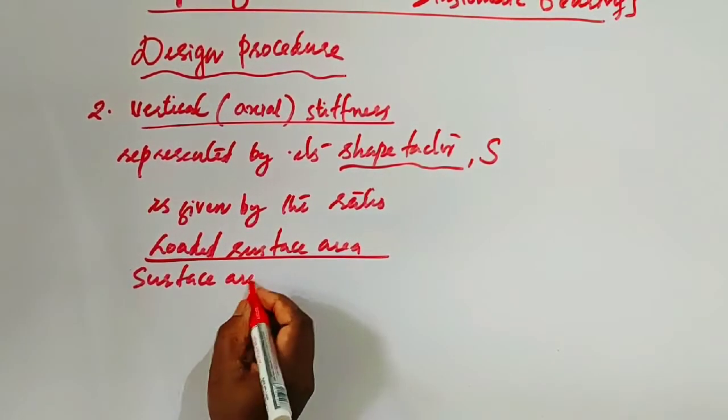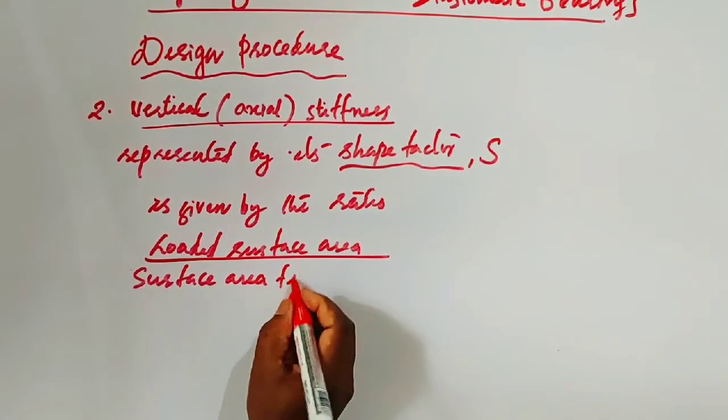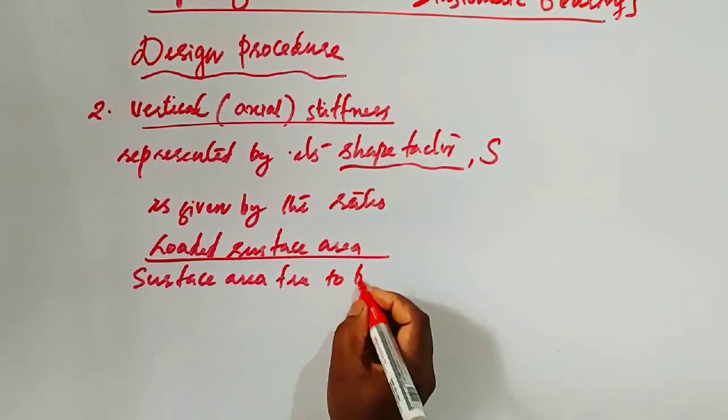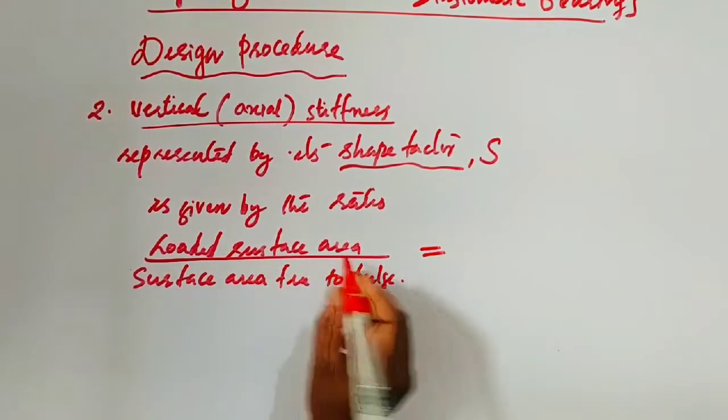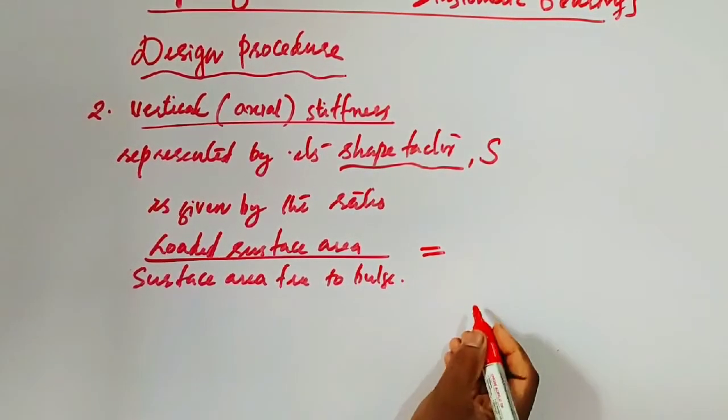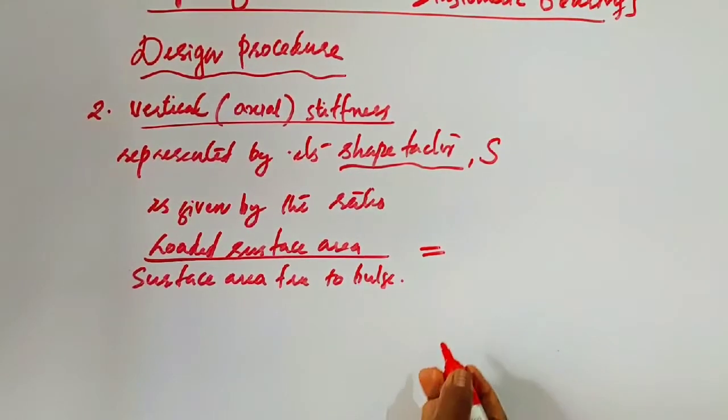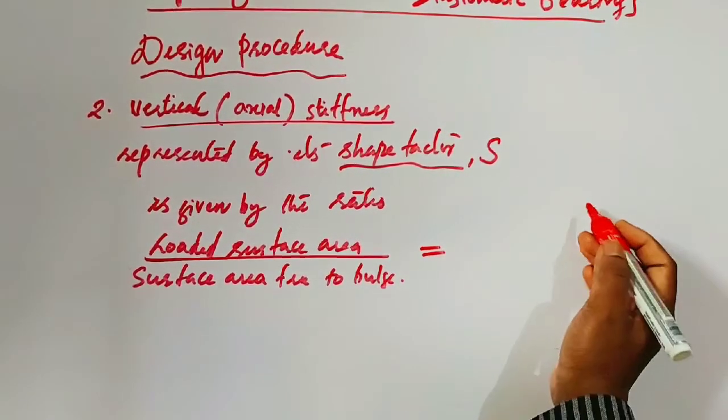Surface area free to bulk. That means loaded surface area means the width into length, that means A into B. I will show you a figure.